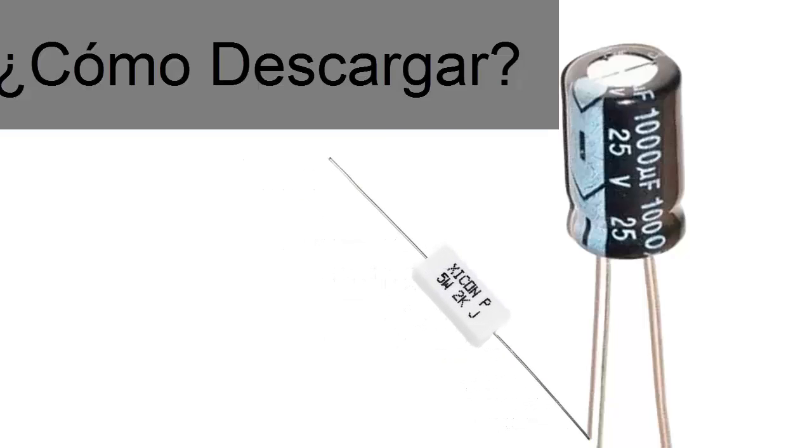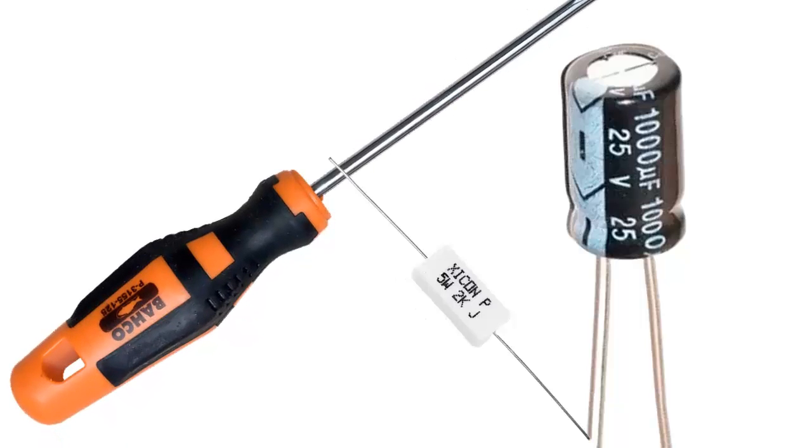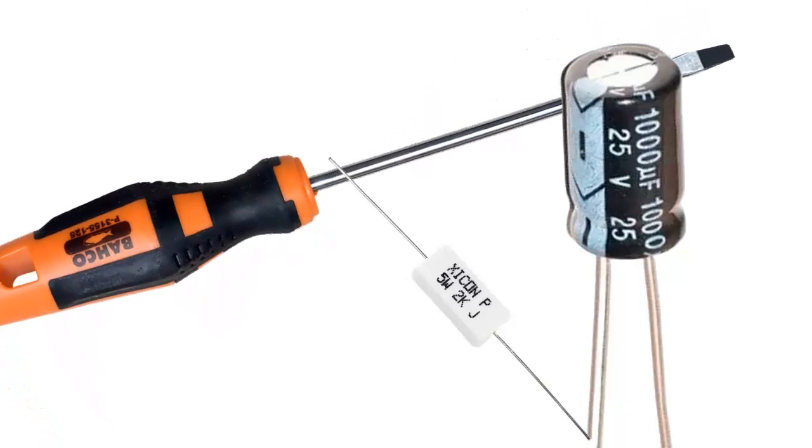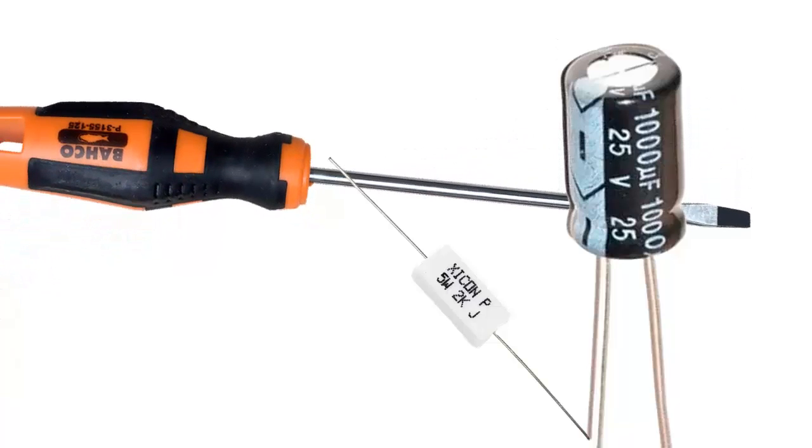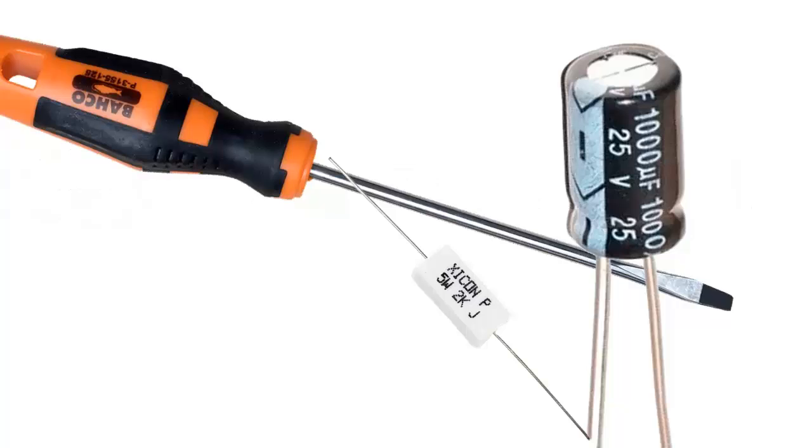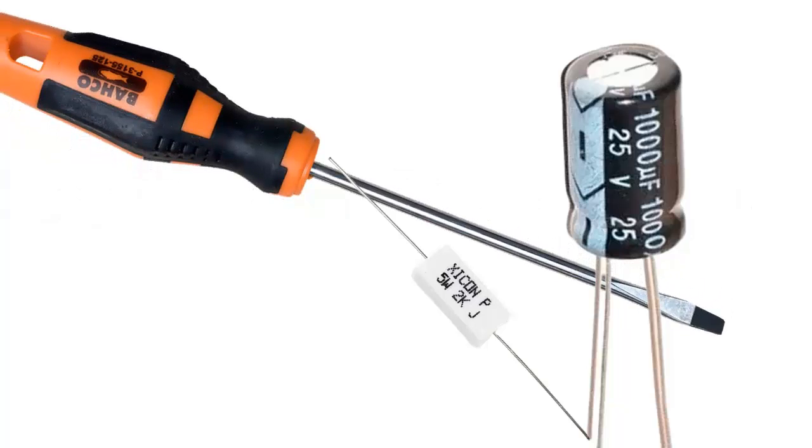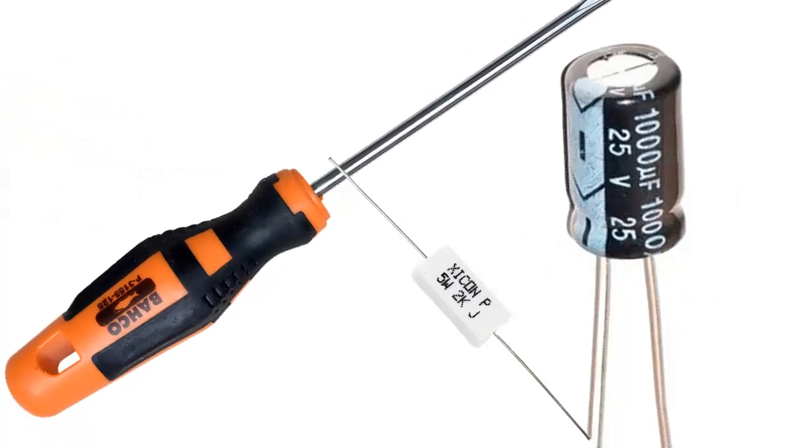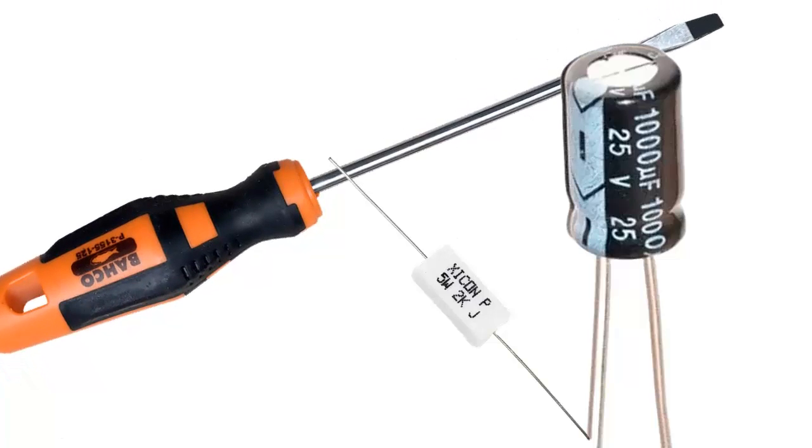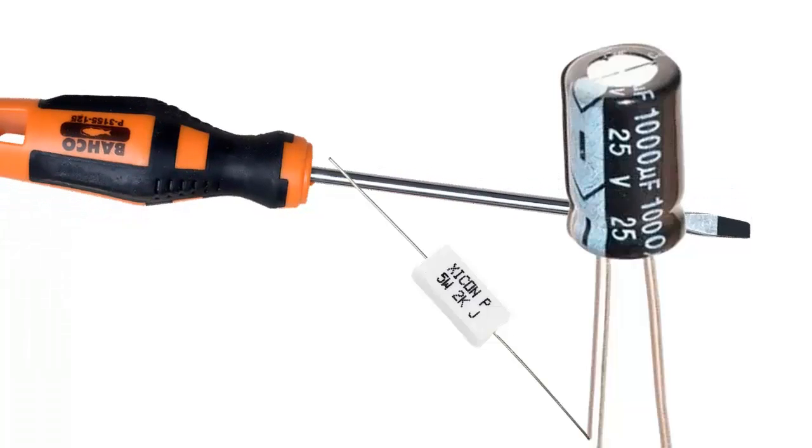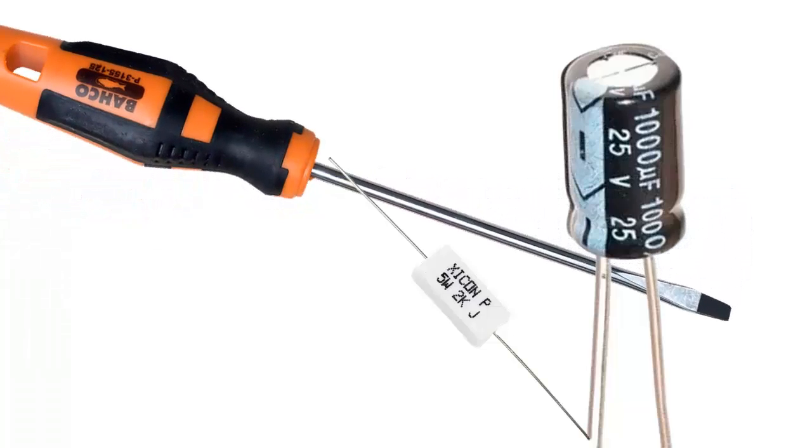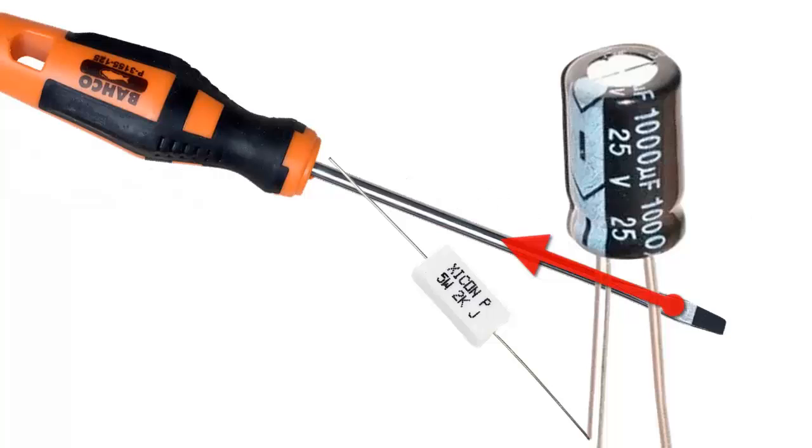To discharge capacitors on air conditioning electronic boards, it is recommended to use resistors in the range of 1 kilohm to 10 kilohms. For example, a 1 kilohm resistor provides a quick discharge but may cause a higher current flow. A 10 kilohm resistor provides a slower, more controlled discharge, minimizing the risk of sparks or damage to the capacitor.